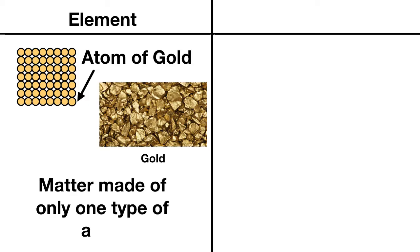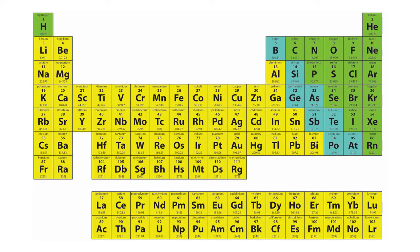Elements are substances that are made of only one type of atom. Now, there are only about 100 pure elements in the entire universe. We show them all on something called the periodic table of elements, which you can learn more about later.